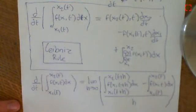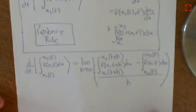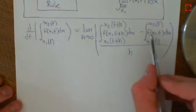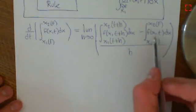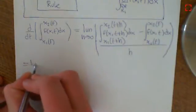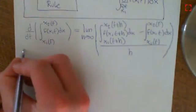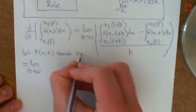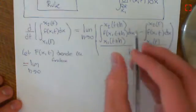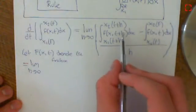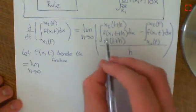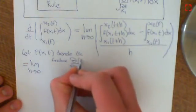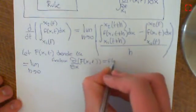We apply the second fundamental theorem of calculus, which tells us these integrals equal the antiderivatives evaluated at the two endpoints. Let big F of x, t denote the antiderivative of little f of x, t where we're antidifferentiating with respect to x. So we want ∂/∂x of big F(x, t) to equal little f(x, t).